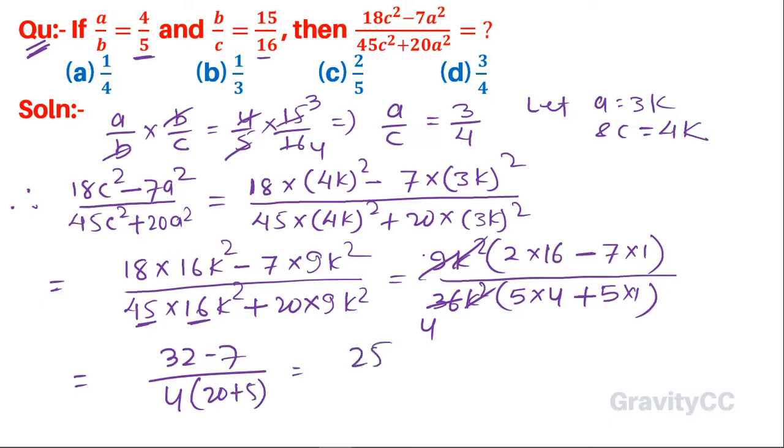So 25 over 4×25. The 25s cancel, giving 1/4. Answer: option A is the correct answer.